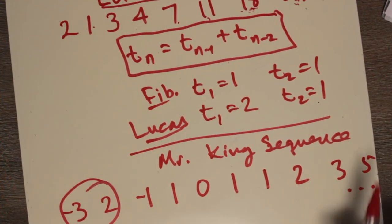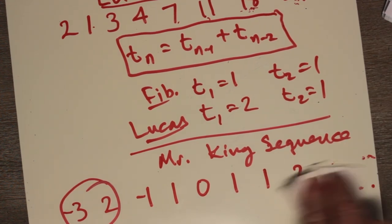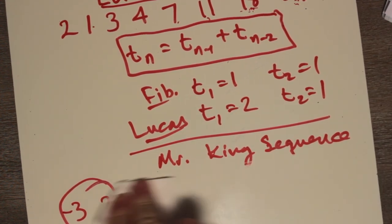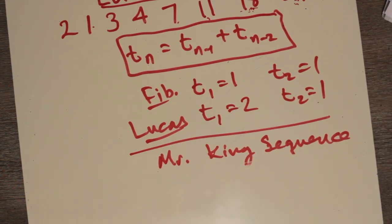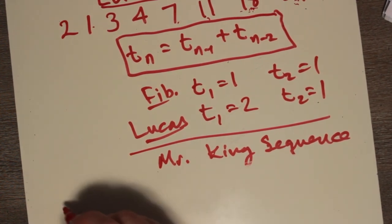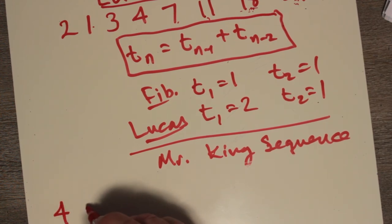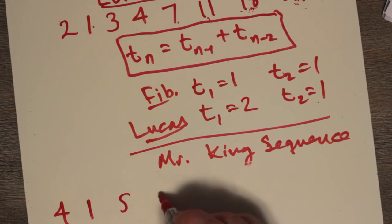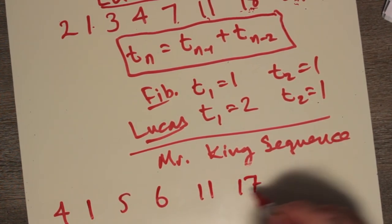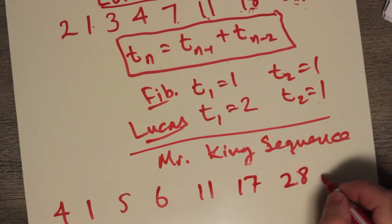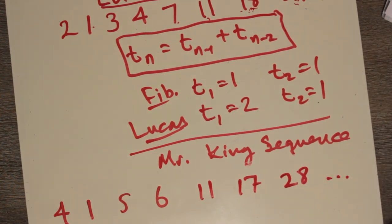But as you can see here, you can certainly get different numbers by starting wherever you want. How about, maybe that's not the Mr. King sequence I was looking for. Because that sounds too much like the Fibonacci sequence. How about 4 and 1? So 4 and 1 make 5. 1 and 5 is 6. 5 and 6 is 11. 6 and 11 is 17. 11 and 17 is 28. And so on. You can just keep going like that.